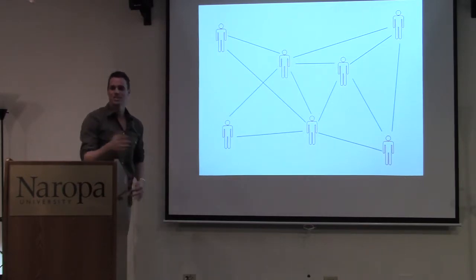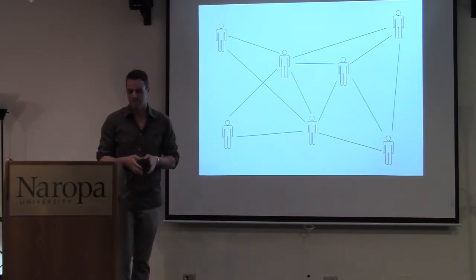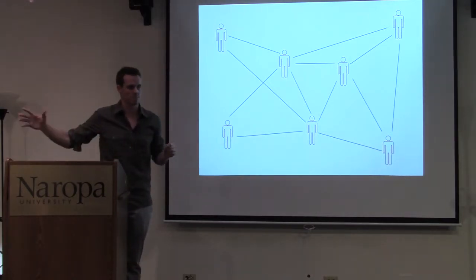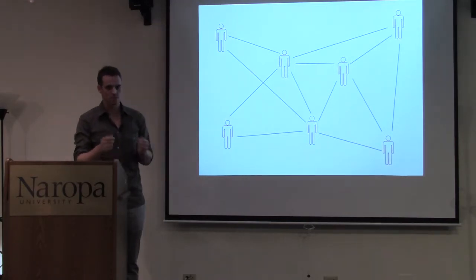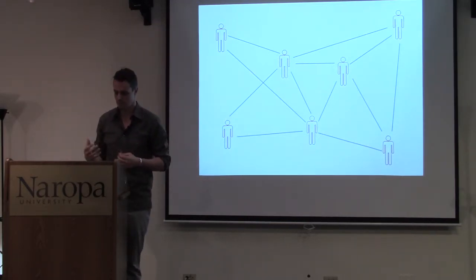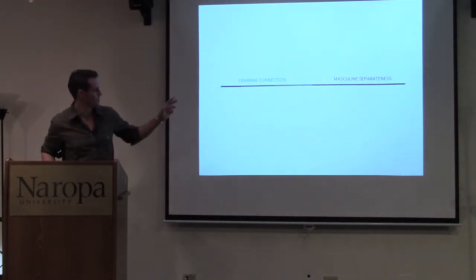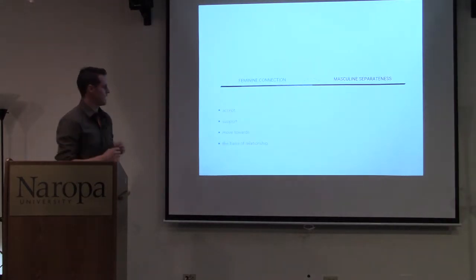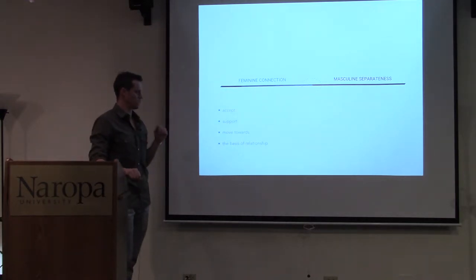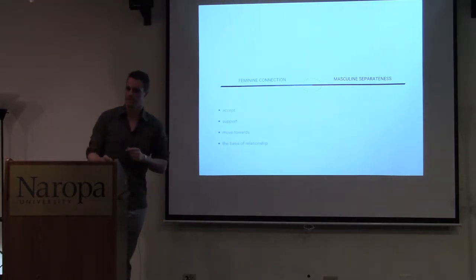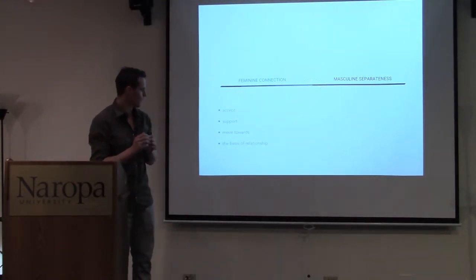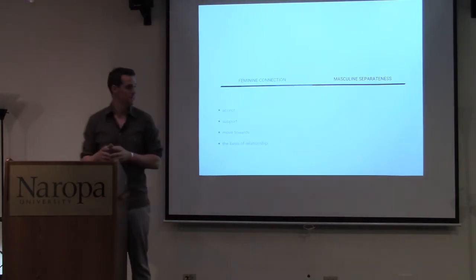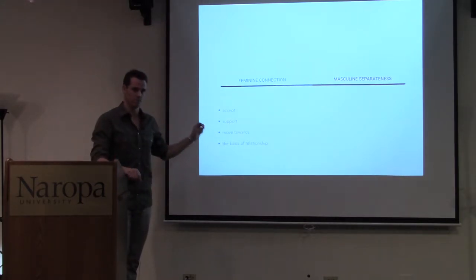So why should this matter to us? Why is it important? It's important because our connectedness and our separateness, they manifest themselves in different ways. And so they give us access to distinct but equally important skill sets. When we act out of our feminine style of connecting, we display an ability to accept, to support and to move towards the other. A willingness to temporarily set aside our own needs to take care of somebody else. We act from empathy and kindness and tolerance and compassion. So the feminine is the basis of relationship.